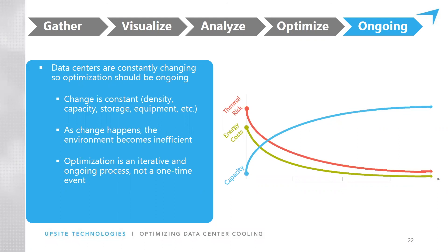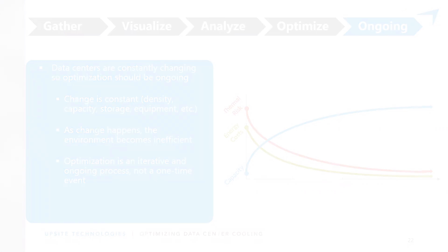The math turns out that cooling represents somewhere around 73% of the non-IT load. So if you take away what's going to the IT equipment and ask how much of the remaining power goes to cooling, it's about 73%. That makes cooling a huge point of leverage in optimizing these facilities.